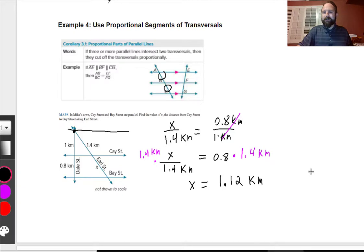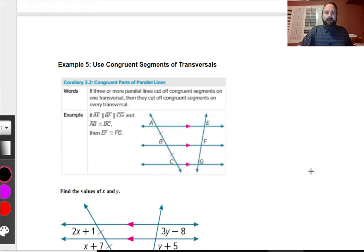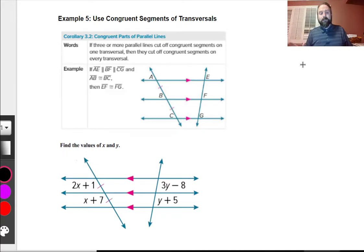We have our last page coming up. Let's go on. So example five. Use congruent segments of transversals. This is our very last one. Basically, what it's saying is, hey, if AB to BC is congruent, they're saying, hey, this EF to FG is going to be congruent as well. This is like the proportion thing, but it's going to be a scale factor of 1. So basically, it says, hey, find the values of X and Y. Well, I know that these are congruent with each other, so I can write 2X plus 1 is equal to X plus 7.